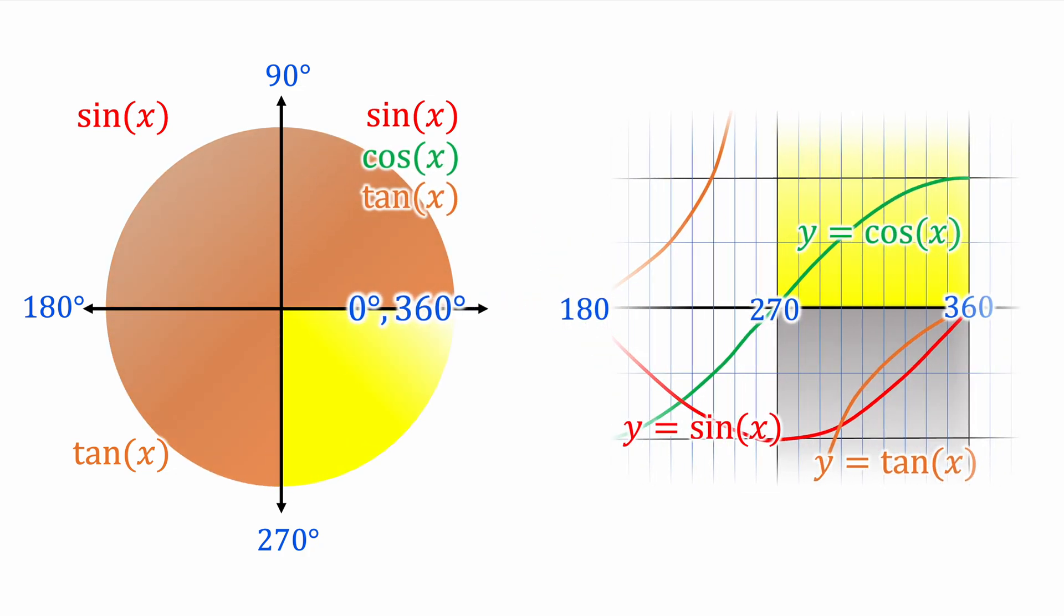Next, our final quadrant between 270 and 360, only the cos graph is positive. Sin and tan are negative. We can label this quadrant cos(x). And this helps us predict when there will be repeated solutions for the three types of graphs.